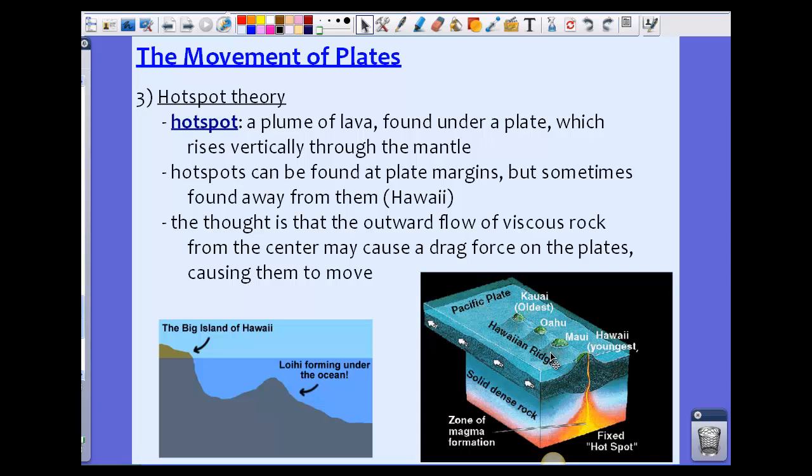They used to be volcanoes. Kauai was the first one to form. As the plate moved, the plate moved so Oahu could form. Then it moved again, then Maui formed. Now it's sitting underneath Hawaii. Actually the plate has moved a little bit and what's forming now is a new island. This isn't the correct spelling, it's more American than Hawaiian. But we have a new island forming underneath the ocean because the hot spot is sitting underneath this portion of it.